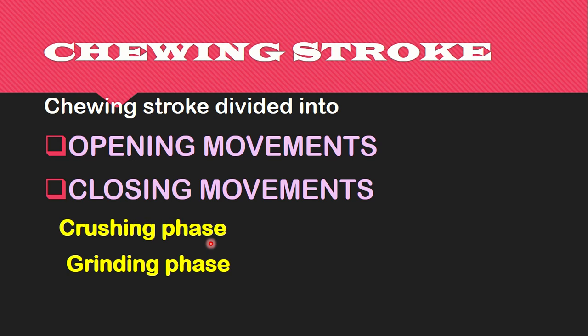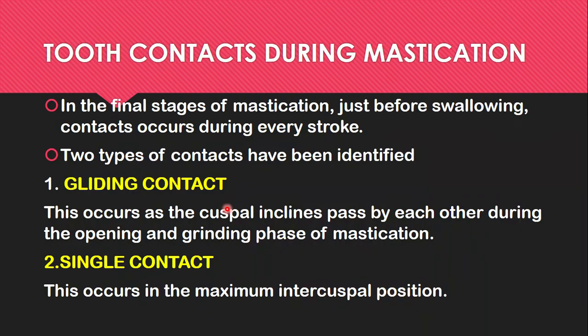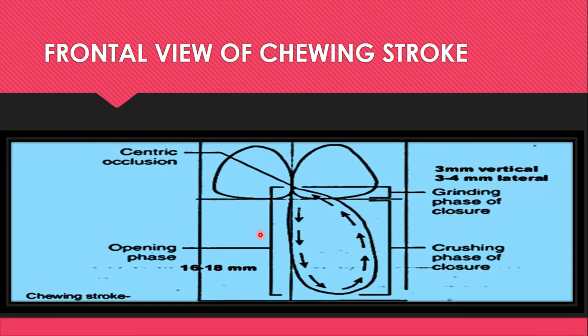Chewing strokes are divided into opening and closing movements. Mastication is made up of rhythmic and controlled separation and closure of the maxillary and mandibular teeth. These complex chewing strokes involve an opening movement and a closing movement. During the closing movement, we have the crushing phase and the grinding phase. The complete chewing strokes are repeated over and over as food is broken down. This is the front view of the chewing stroke.